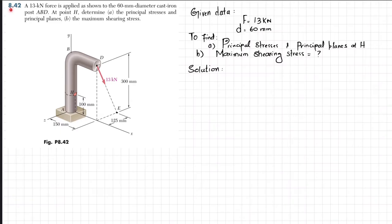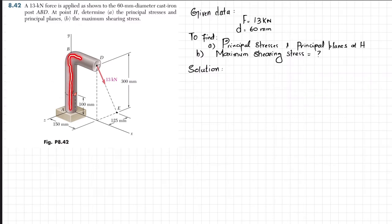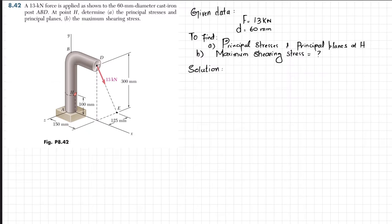Welcome back. Problem 8.42: a 13 kilonewton force is applied as shown to a 60 millimeter diameter cast iron post ABD. At point H, determine the principal stresses and principal plane, and in part B, the maximum shearing stress. Given data: force is 13 kilonewton, diameter of the post is 60 millimeter.